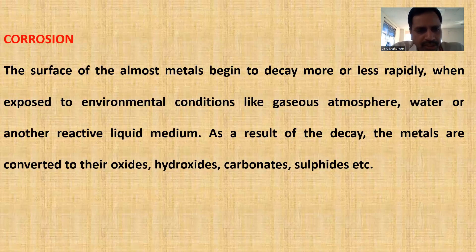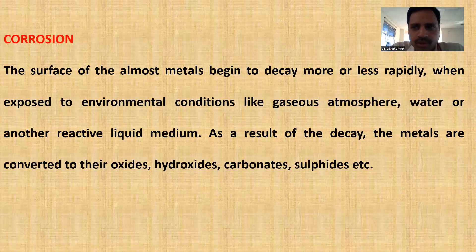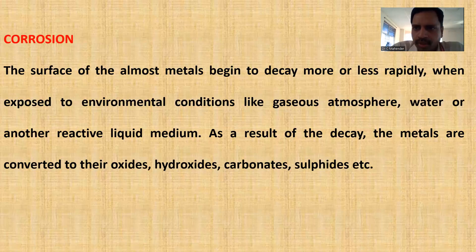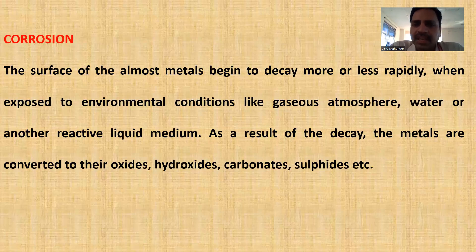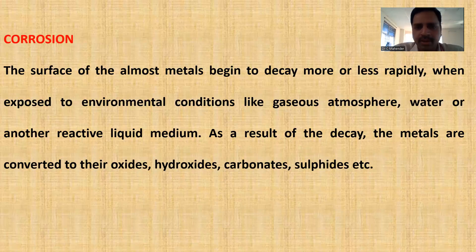The metals cannot be used to make articles when in the form of oxides, hydroxides, carbonates, and sulfides. For example, iron will be extracted from iron ore. The properties of iron ore and pure iron are both different — the malleable property, ductile property, and tensile strength of iron increase when we bring the metal into its pure form.